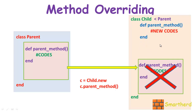We can define the same parent method again in class Child — def parent_method — and within this method we can change our code. This is our new code. So if we initialize object c equal to Child.new and call c.parent_method, it is not going to access the parent_method from the parent class. It is going to access the parent_method which is present in class Child. So we will be able to access the new code we created. This was all about the concept of method overriding.